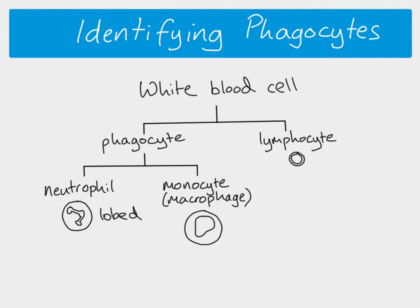We can stain the nuclei of our white blood cells and look at them under a microscope so that the nucleus comes up very clearly, and this is what it would look like if you did that.